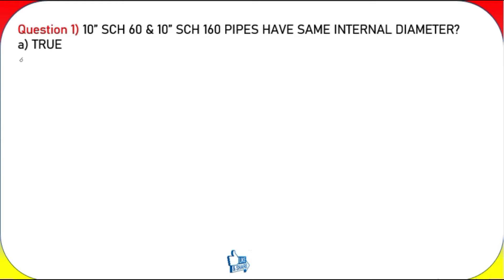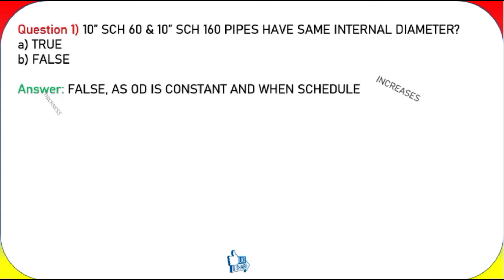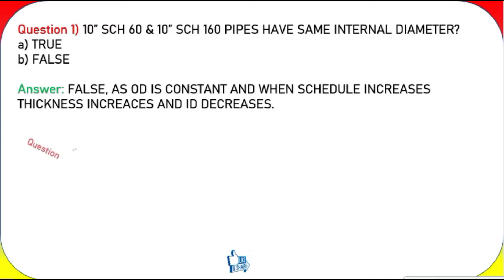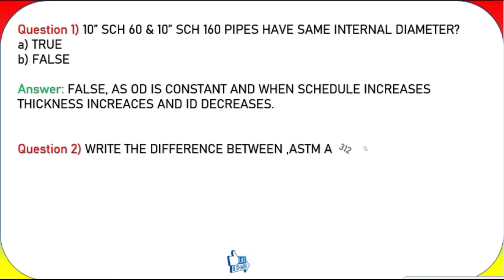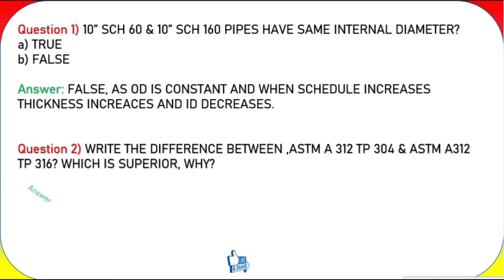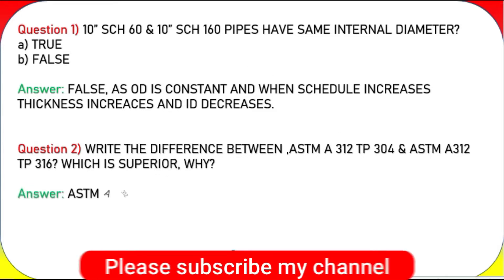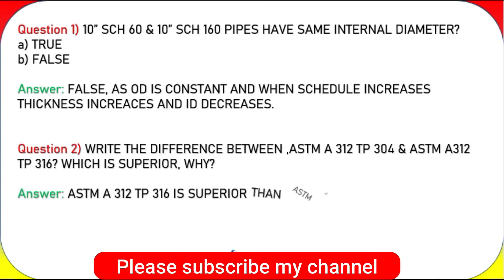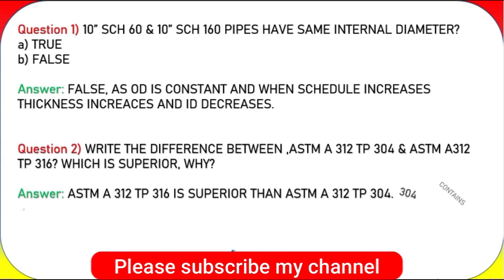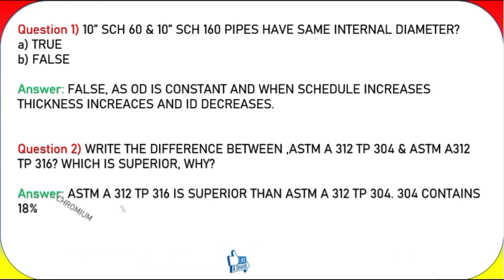Question 1: 10 SCH 60 and 10 SCH 160 pipes have the same internal diameter — true or false? Answer: False. As OD is constant, when schedule increases, thickness increases and ID decreases.